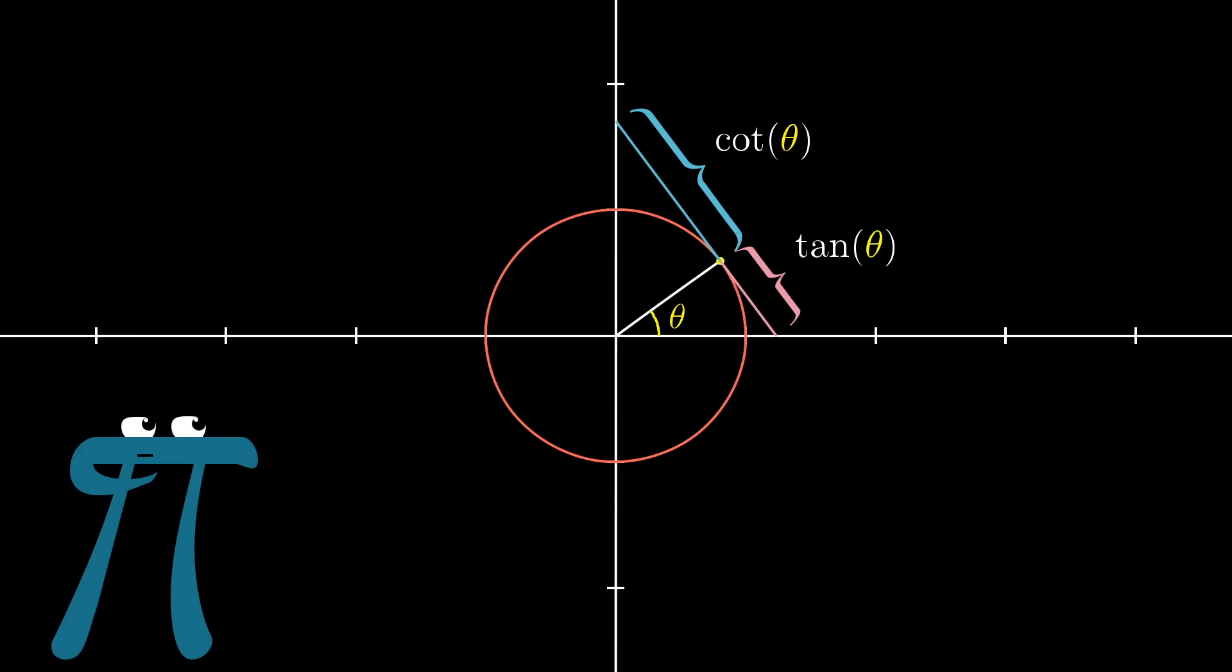Again, this gives a really intuitive feel for what those quantities mean. You kind of imagine tweaking that theta and seeing when cotangent gets smaller, when tangent gets larger, and it's a good gut check for any students working with them.